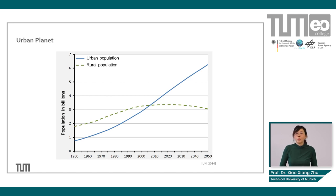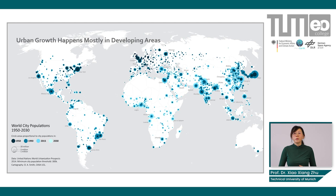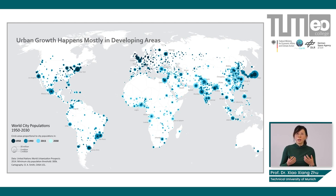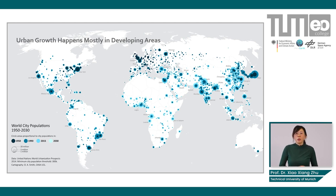Looking at the geospatial distribution of urbanization, the dark blue represents more established urban areas in developed regions. The light blue shows where urbanization is currently happening and will happen in the future — urban growth is occurring mostly in developing areas. To have planned urbanization, the first key is to get geoinformation of these urban areas.